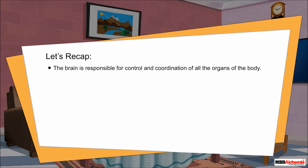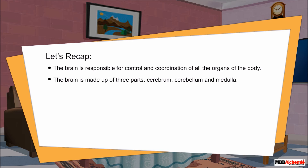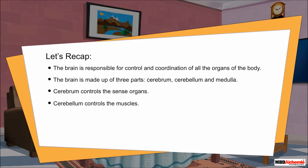Let's recap. The brain is responsible for the control and coordination of all organs of the body. The brain is made up of three parts: cerebrum, cerebellum, and medulla. The cerebrum controls the sense organs, the cerebellum controls the muscles, and the medulla controls the involuntary actions of the body.